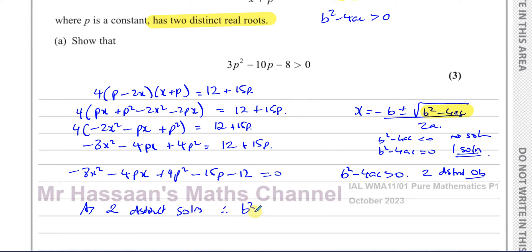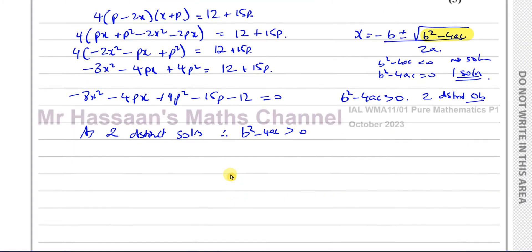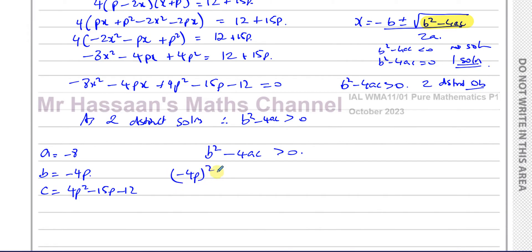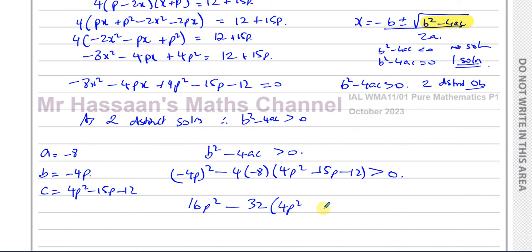Since we have two distinct solutions, b² minus 4ac must be greater than zero. In our quadratic: a equals negative 8 (coefficient of x²), b equals minus 4p, and c equals 4p² minus 15p minus 12 (the constant term). So b² minus 4ac greater than zero gives us: (minus 4p)² minus 4 times (minus 8) times (4p² minus 15p minus 12) is greater than zero, which gives 16p² plus 32 times (4p² minus 15p minus 12) greater than zero.